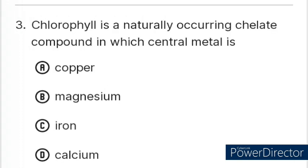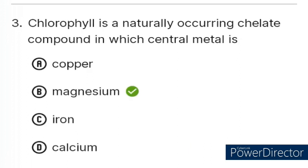Question number 3. Chlorophyll is a naturally occurring compound in which the central metal is? Option A: Copper, B: Magnesium, C: Iron, D: Calcium. The correct answer is Option B: Magnesium.